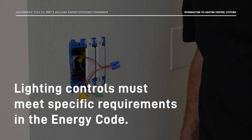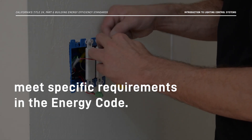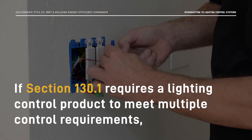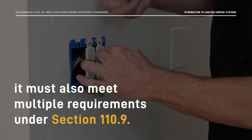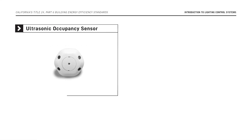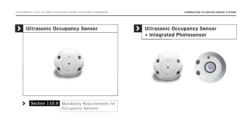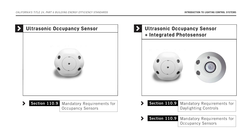Lighting controls must meet specific requirements in the Energy Code. If section 130.1 requires a lighting control product to meet multiple control requirements, it must also meet multiple requirements under section 110.9. For example, if an ultrasonic occupancy sensor is installed to comply with the shut-off control requirements in the Energy Code, then it also must comply with the specific device requirements in section 110.9. If that same device contains an integrated photosensor to serve as part of a daylighting control system, then it also needs to comply with requirements for a daylighting control contained in section 110.9.